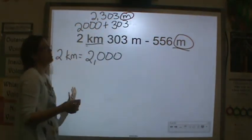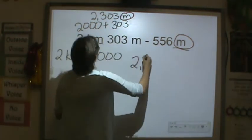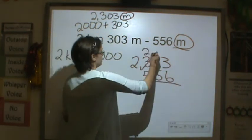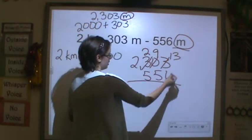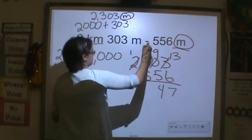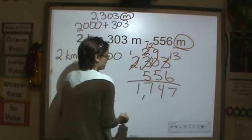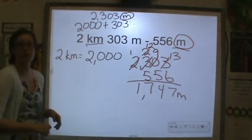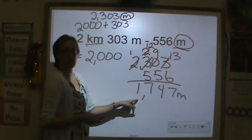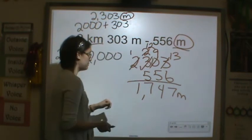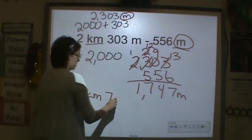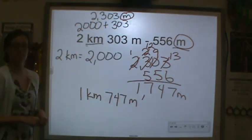Now I can subtract because the units are the same — like having like denominators. Doing the subtraction with regrouping: 2,303 minus 556. Regroup as needed: the answer is 1,747 meters. You could also express this as 1 kilometer and 747 meters — both are equivalent.